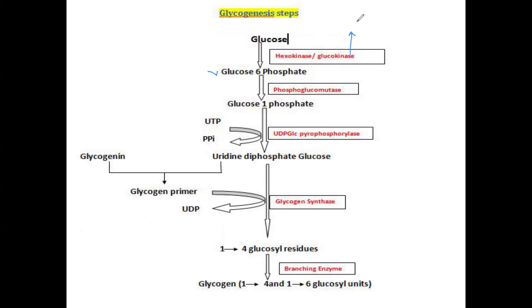Glucokinase is found in the liver, while hexokinase is found in the muscle cells and other extra-hepatic tissues. The glucose is converted into glucose-6-phosphate, and then the enzyme phosphoglucomutase changes the position of the phosphate group from position 6 to position 1, converting glucose-6-phosphate into glucose-1-phosphate.